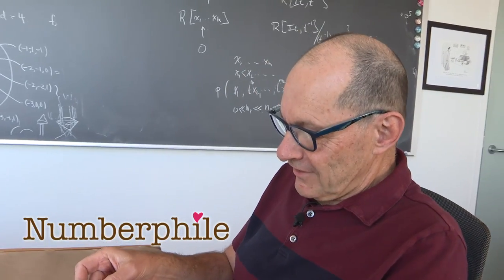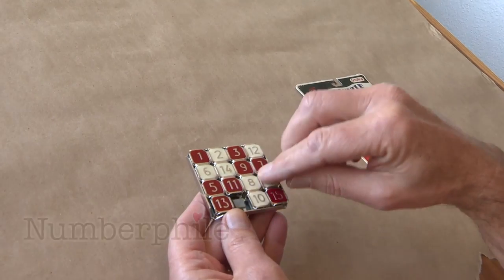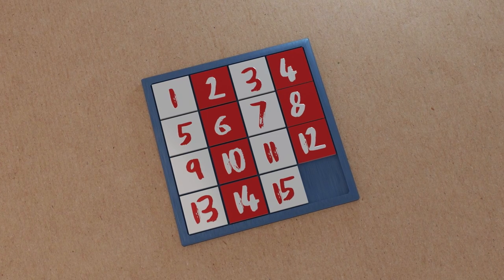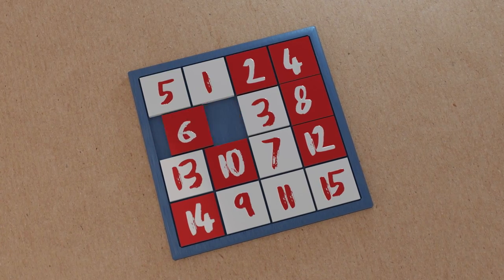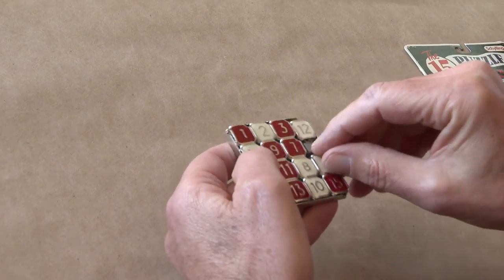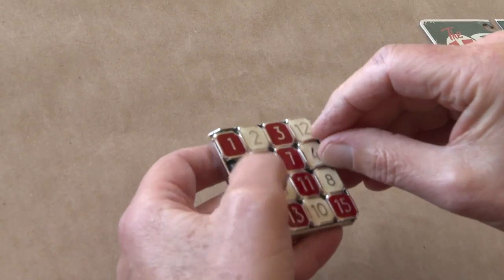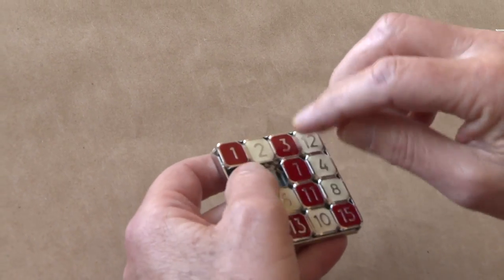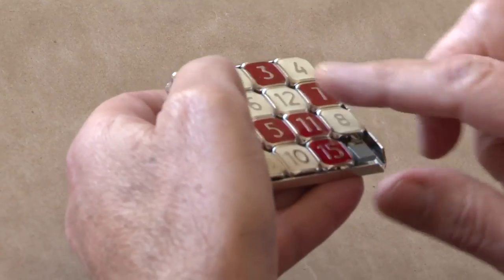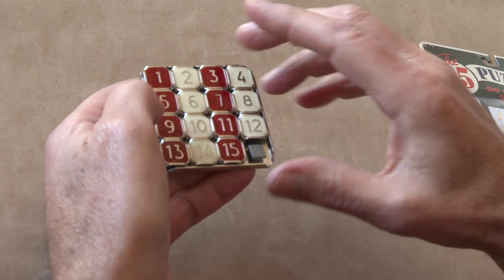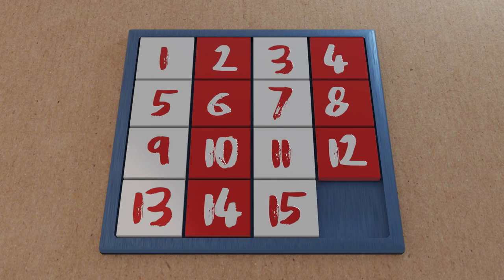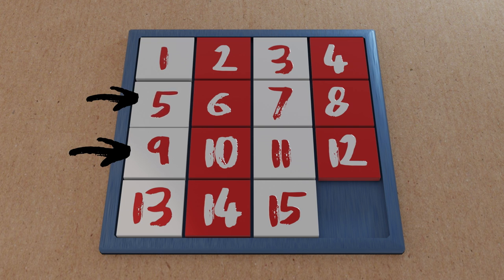Today we're going to talk about this fantastic little puzzle called the 15 puzzle. It's a tray with 15 little squares, each numbered 1 through 15 and one blank, so we can move the squares around. If we want to get these in order — 1, 2, 3 in the first row, then 9, 10, 11, 12, then 13, 14, 15 — we can only make moves where we switch one tile with the empty spot. We can't switch two tiles that aren't adjacent to the blank.